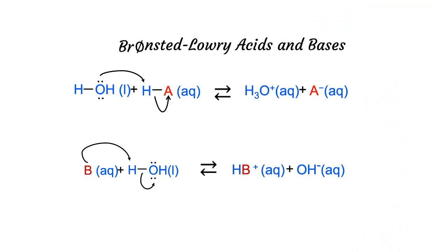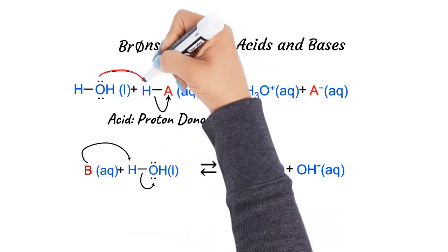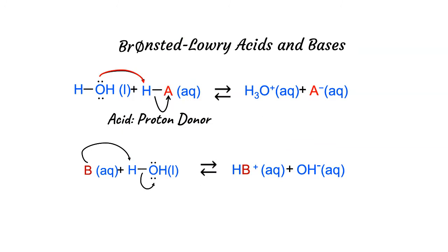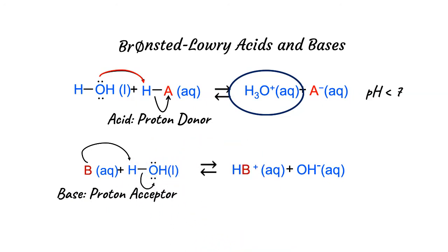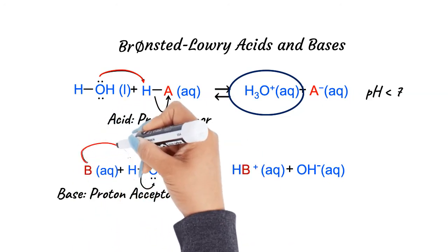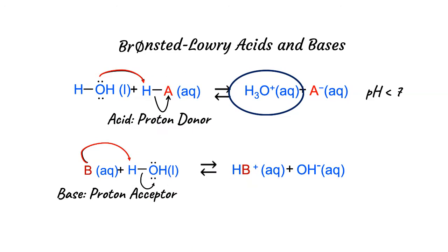Some chemical substances react with water and change the concentrations of hydronium or hydroxide ions by either donating or accepting protons from water. These substances are called Bronsted-Lowry acids or bases. An acid acts as a proton donor, denoted as HA, and transfers a proton to the water molecule producing hydronium ions — therefore acids increase the hydronium ion concentration and the pH will be less than 7 at 25°C. A base acts as a proton acceptor, denoted as B, and gains a proton from water producing hydroxide ions — therefore bases increase the hydroxide ion concentration and decrease the hydronium ion concentration, so pH will be greater than 7 at 25°C.